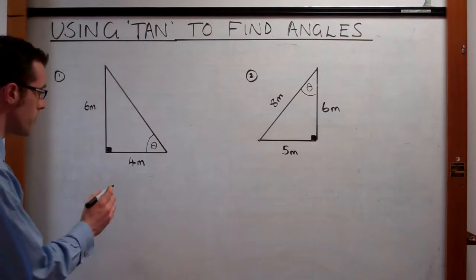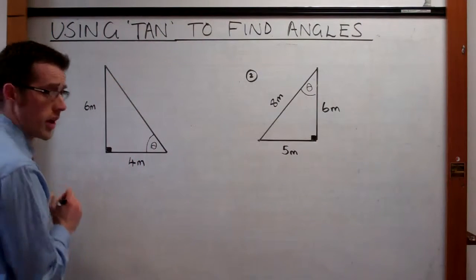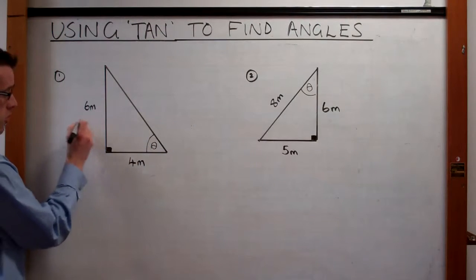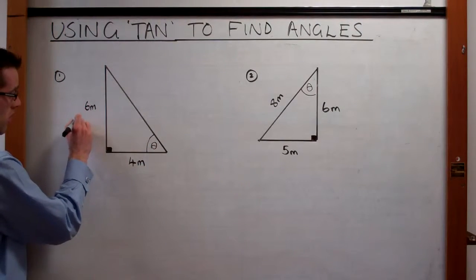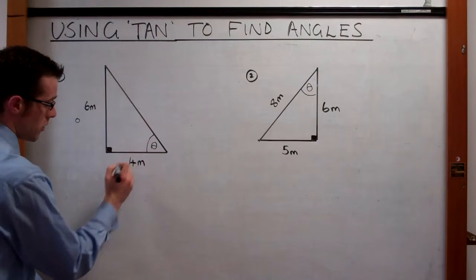First of all, we've got our drawing of a right-angled triangle. We need to label our sides. Here we have the opposite, so we'll label it with an O, and we've got the adjacent.